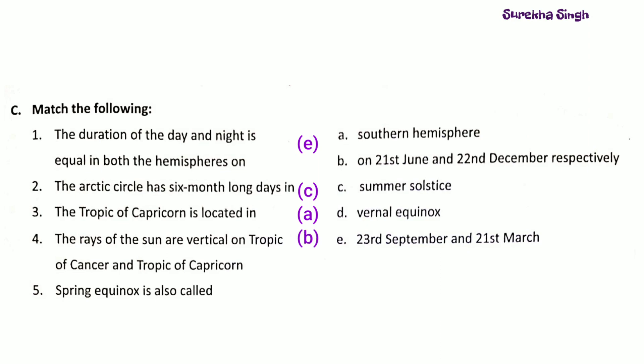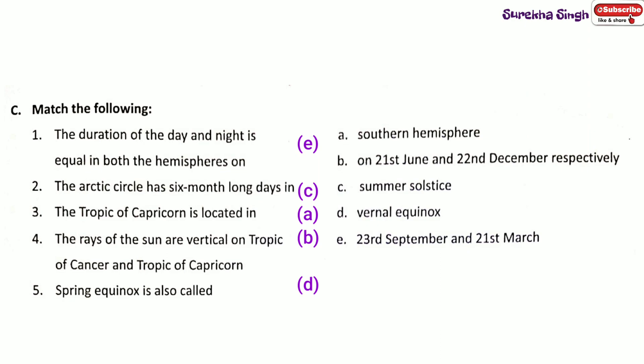3. The Tropic of Capricorn is located in — Option A: Southern Hemisphere. 4. The rays of the sun are vertical on Tropic of Cancer and Tropic of Capricorn — Option B: on 21st June and 22nd December respectively. 5. Spring equinox is also called — Option D: Vernal Equinox.